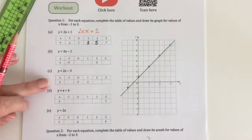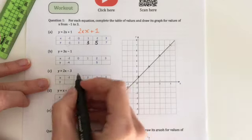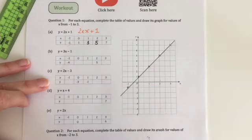Let's do another one. Let's do C. So y = 2x take away 3. We're doing 2 times x take away 3.